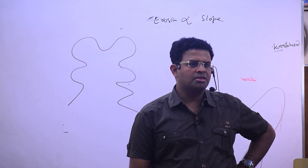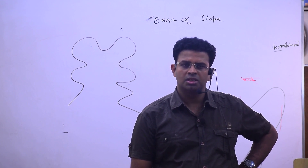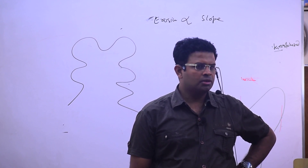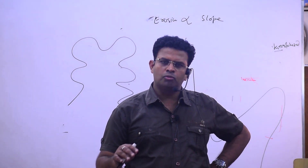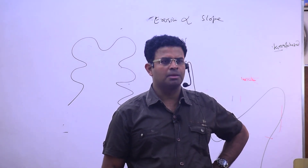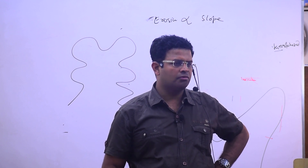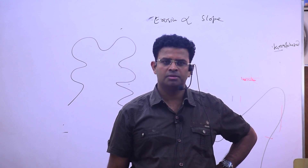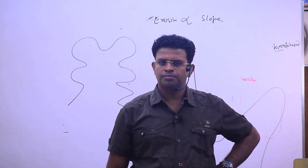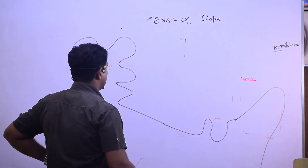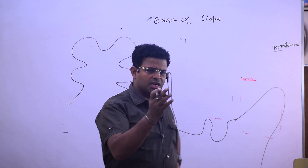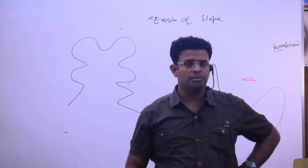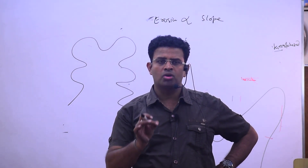Do you know momentum - mass into velocity? We will understand this. Mass into velocity: if you are moving on a cycle with 1 meter per second and you are moving in a truck with 1 meter per second, who has more momentum? The truck. Inertia is the inherent property of a body having mass - whatever has mass will have inertia.